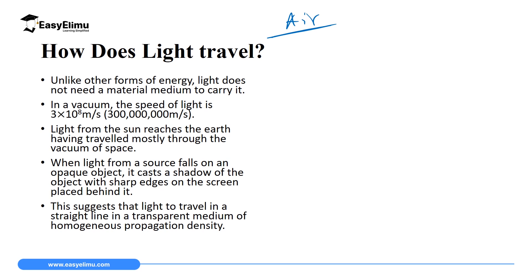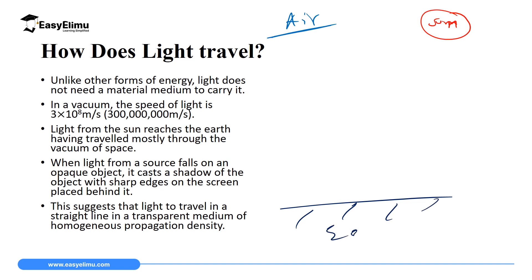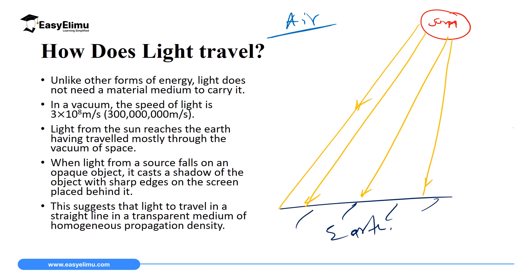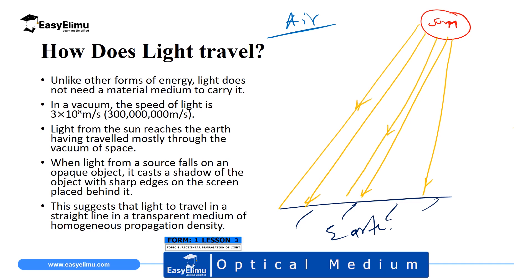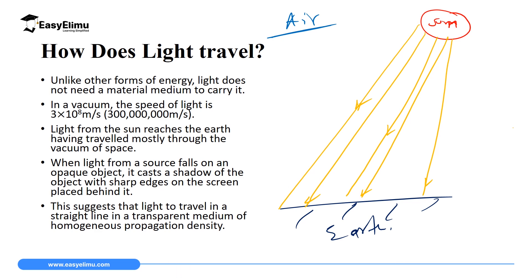Another important point is that light, as a form of energy, does not require any material medium for it to be transmitted — light can travel even without a medium. To prove that, consider that we receive rays from the sun. The sun is very far away from the earth's surface, yet we receive those rays almost instantly. The distance from the sun to the earth's surface is several millions of kilometers.